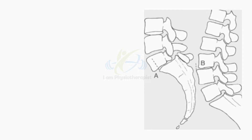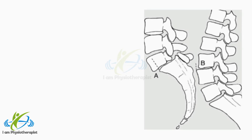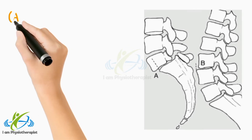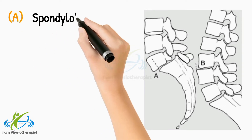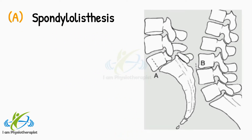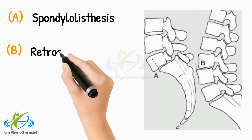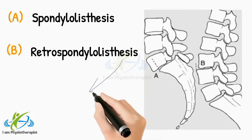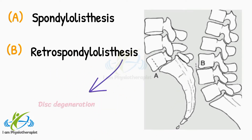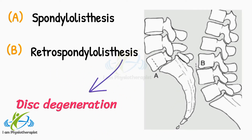Note the relationship of each vertebra to its neighbour. In particular, note spondylolisthesis as shown in point A. Point B shows retrospondylolisthesis, usually associated with disc degeneration.